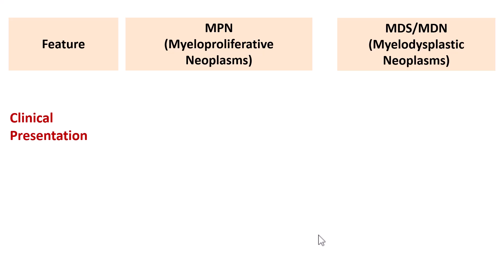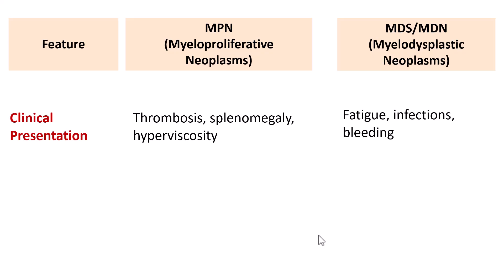Clinically, because of increased cell counts, Myeloproliferative Neoplasms often present with thrombosis, splenomegaly, and hyperviscosity. Whereas in Myelodysplastic Neoplasms, because of anemia, thrombocytopenia, and neutropenia, patients often present with fatigue, bleeding, and infections.